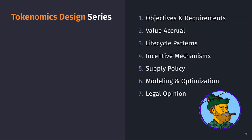Those seven steps include setting your objectives and requirements, configuring your token's value accrual, its lifecycle patterns, optimizing its incentive mechanisms, its supply policy, modeling and optimization of parameters, and finally, getting a legal opinion.